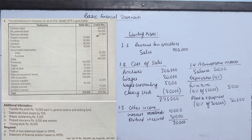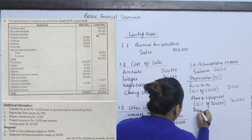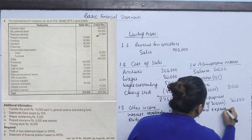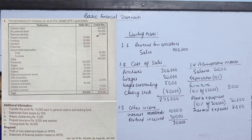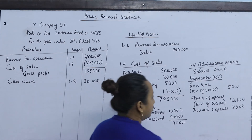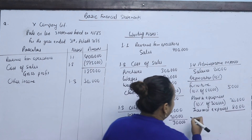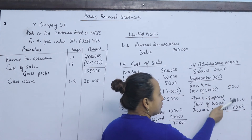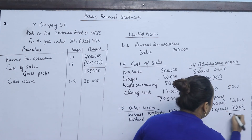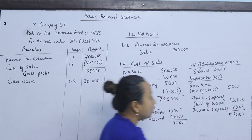Wages outstanding is added. Prepaid insurance expired is 8,000, which goes to expenses. Total administrative expenses including salaries 20,000, depreciation 5,000, and other items comes to 53,000.